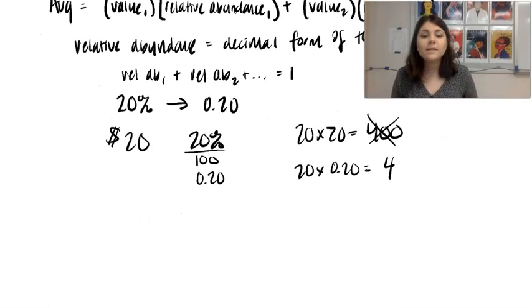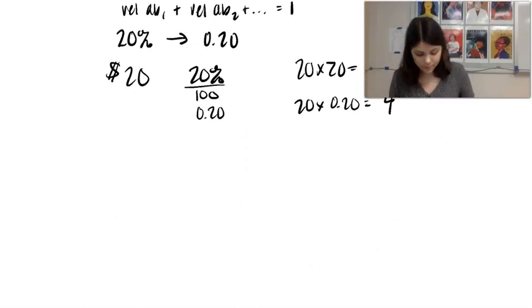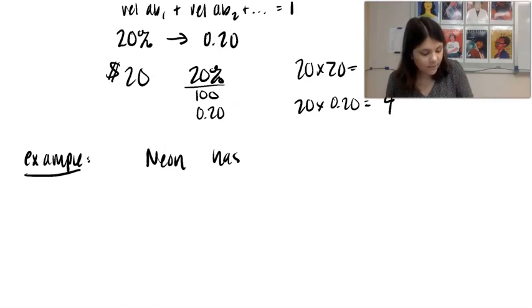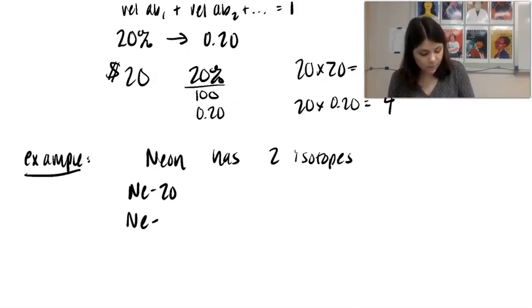So here we have to put in the decimal form when you're multiplying or dividing a percent. You have to put in the decimal form. All right. So let's do an example on how we would actually do this. So let's talk about neon. Neon has two isotopes.